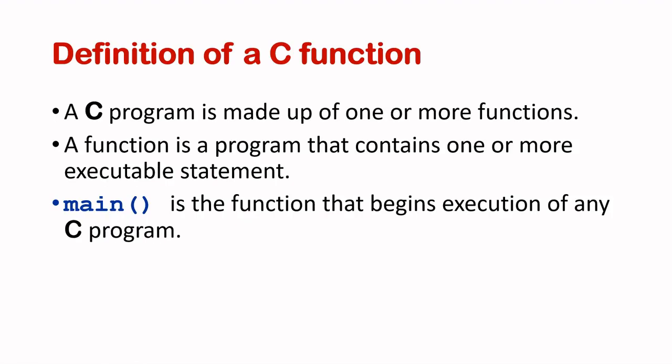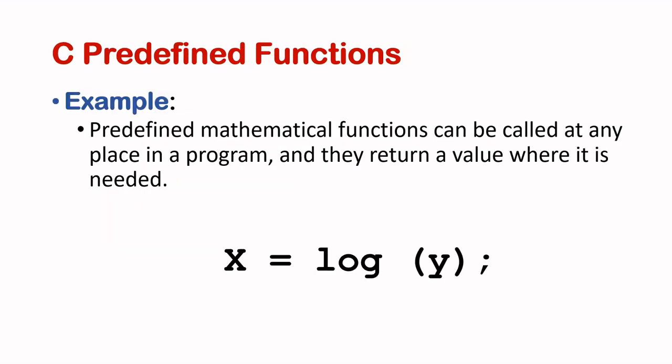So what is a C function? As we have seen in my earlier videos, a C program is made up of one or more functions. Basically, a function is a program that contains one or more executable statements. We have seen that the main function is the function that begins execution of any C program, so the main function has to be there.